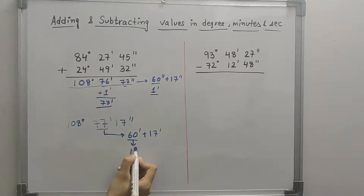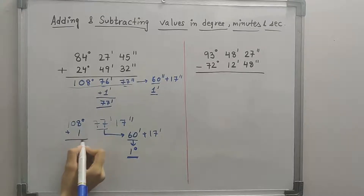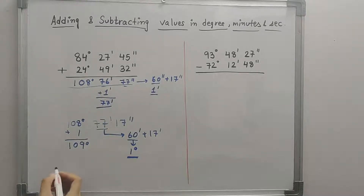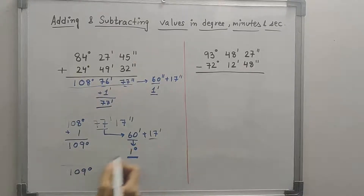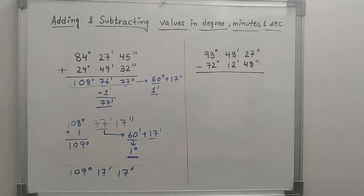And 60 minutes is equal to 1 degree. So we take this 1 degree right here and add it to 108 degrees, and we end up with 109 degrees. Our final answer would be 109 degrees, 17 minutes, and 17 seconds. You are allowed to carry your calculator for your navigation exam, so all these calculations can be done by simply adding the values in the calculator.